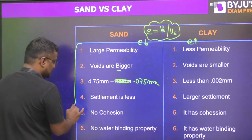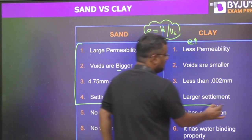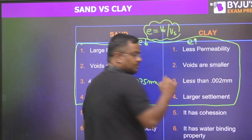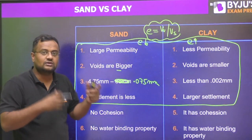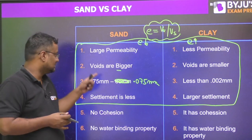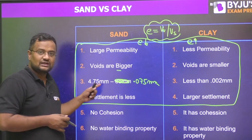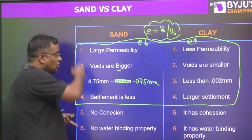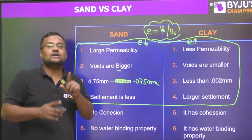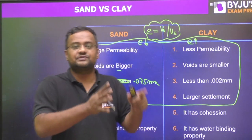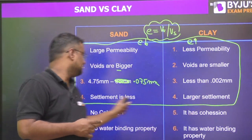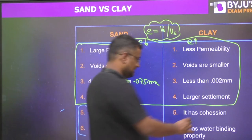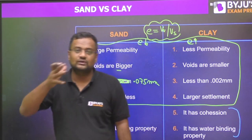Among these four differences — permeability, size, settlement, and cohesion — only cohesion can be checked directly in the field. Permeability you check in the lab, size requires sieve analysis, and settlement is time-consuming. So all four of these differences between sand and clay can only be distinguished with the help of apparatus or are time-consuming.